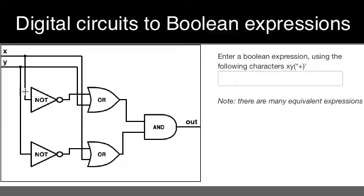So in this case, x is the input to this top NOT gate and y is the input to the bottom NOT gate, and therefore their outputs are x prime and y prime.